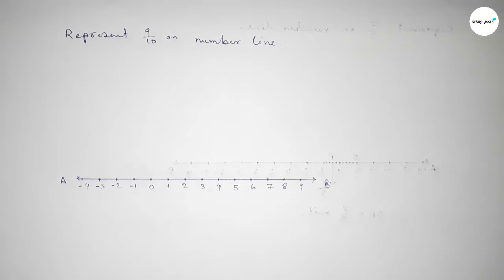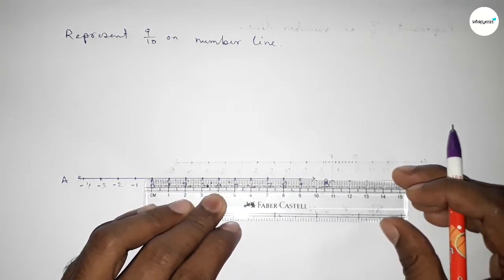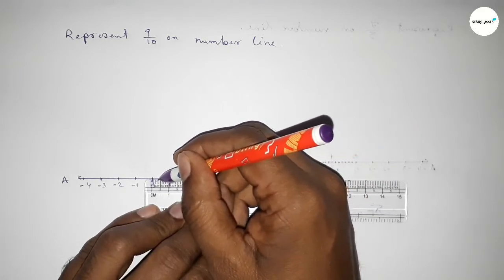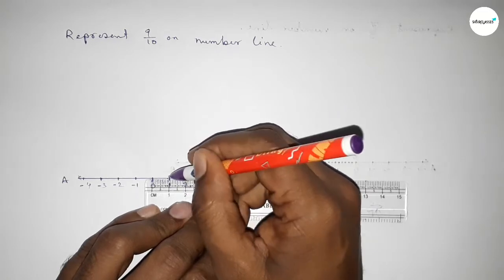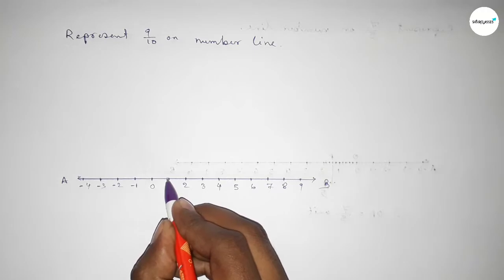Next, we have to divide the distance between any two numbers into 10 equal parts. So if you divide the distance between 0 to 1 into 10 equal parts, then the length of each part equals 0.1. So this is 1, 2, 3, 4, 5, 6, 7, 8, 9. So this is 0.9 or 9 over 10 on the number line.